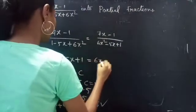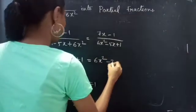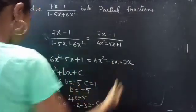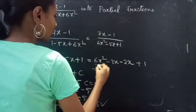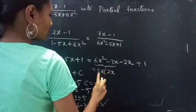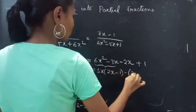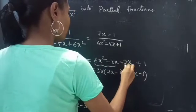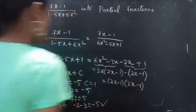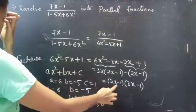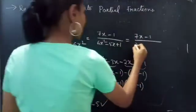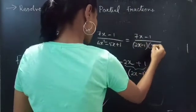We split −5x as −3x − 2x. So 6x² − 3x − 2x + 1. Taking 3x common from the first two terms gives 3x(2x − 1), and taking −1 common from the last two terms gives −1(2x − 1). So the factorization is (2x − 1)(3x − 1). Therefore the given fraction becomes (7x − 1) / [(2x − 1)(3x − 1)].